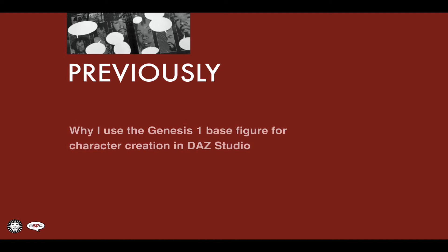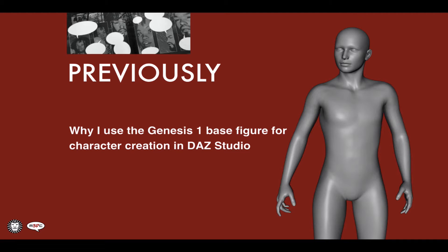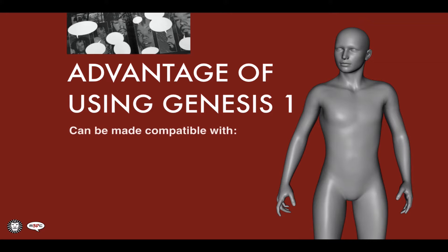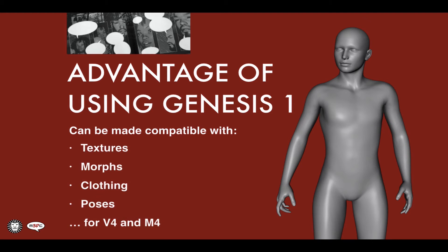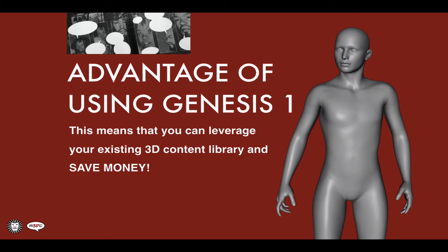In my last video I discussed my reasons for using the first generation Genesis base figure for pretty much all the characters I create. My reasons for using Genesis can be summed up as follows: I use the Genesis 1 base figure simply because it can be made compatible with all the textures, morphs, clothing, and poses that were originally designed for Victoria 4 and Michael 4. So if you already have an existing library of legacy Victoria 4 and Michael 4 content, in my opinion Genesis 1 is the best way to go if you still want to leverage that content for use on an updated and more flexible base figure.